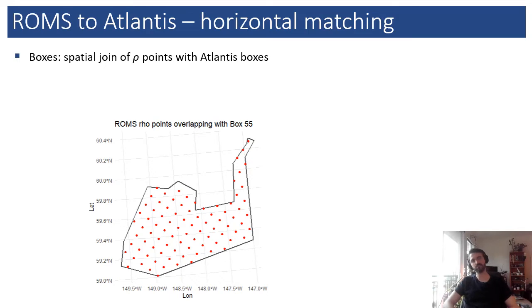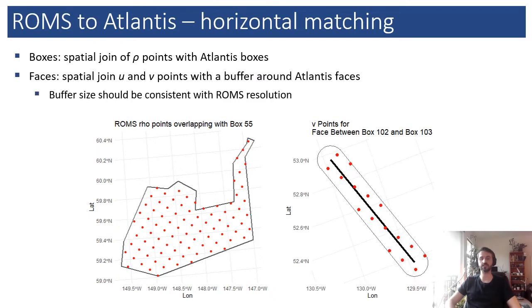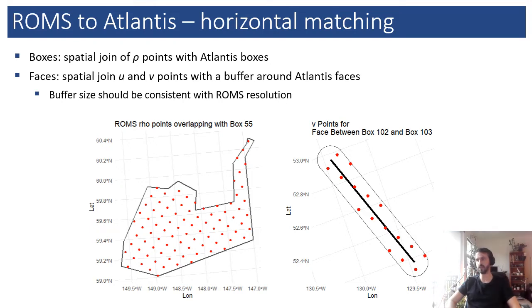For the state variables on the rho grid, it can be as simple as doing a spatial join of the ROMS points with your Atlantis boxes in your geometry. For the velocities, we're interested not so much in the box but in fluxes across faces. The approach we used was drawing a buffer around each face. In the figure on the right, you can see the faces as the thick black line, the red dots are the V points, and the thin black line around the face is a 10-kilometer buffer. The size of the buffer should be meaningful with respect to the distance between points in the ROMS grid.